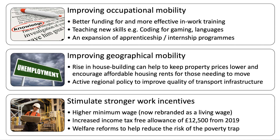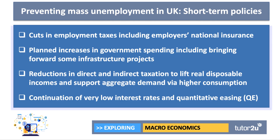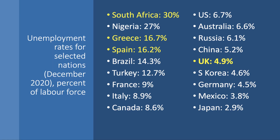The key takeaway is that supply-side policies are designed to improve mobility, human capital, and incentives. During the pandemic, the Bank of England's chief economist Andy Haldane warned that without short-term policies in 2020-21, unemployment in the UK could have reached four to five million people — twice what it was. The government cut employment taxes including National Insurance, brought forward infrastructure projects, cut VAT from 20% to 5% in hospitality and leisure, and increased Universal Credit. The Bank of England cut interest rates and expanded quantitative easing — a whole series of policies to prevent the return of mass unemployment.